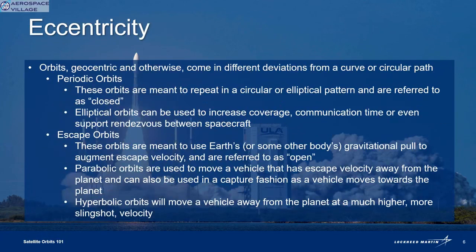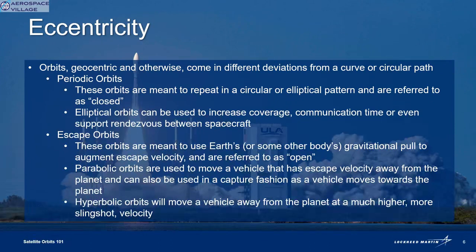Once we begin to consider the type of curve an orbit might have, we can begin to lump them into categories. Periodic orbits repeat in some consistent fashion and are either elliptical or circular in nature. Because there's no break in the pattern, these are sometimes referred to as closed orbits. There is another class under eccentricity called escape or open orbits, used to move vehicles away from Earth. Parabolic orbits complete minimum energy escapes when moving away from Earth, or captures when moving toward a planet. Hyperbolic orbits can send a vehicle off at a much higher speed and are factors in gravitational slingshots, where a vehicle flies by a planet and uses its gravitational pull to pick up speed.